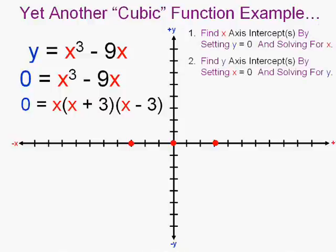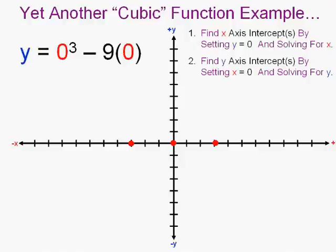The second step is to find the y-axis intercept or intercepts. Now that's a little easier remember because all I have to do is find out where x equals zero or plug in a zero for x. I love zero. He's easy to solve. Zero to the third minus nine times zero, guess what? It equals zero. So in this case, the y-axis intercept happens to be also one of the x-axis intercepts.